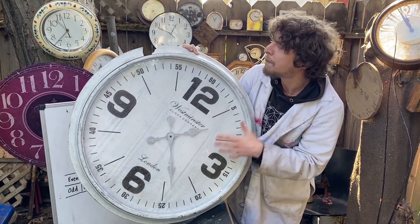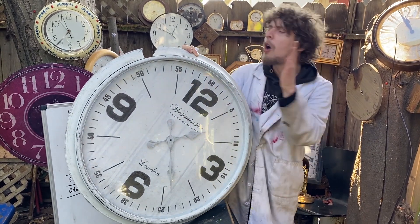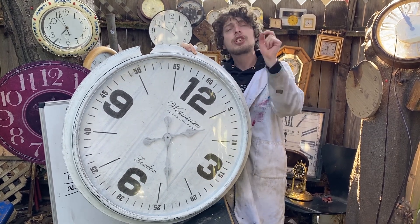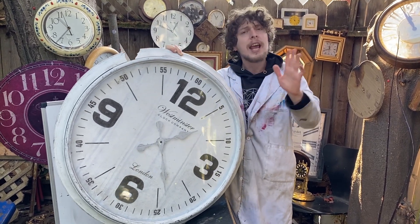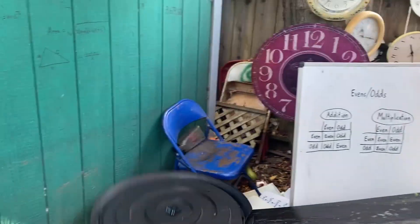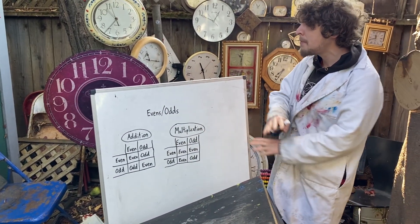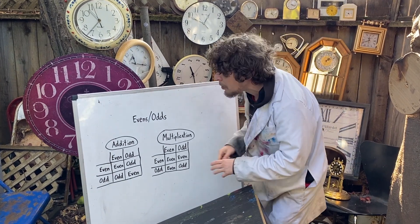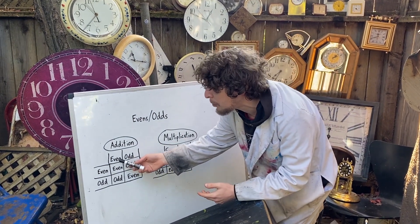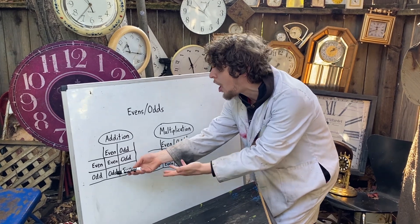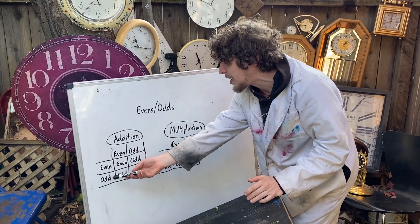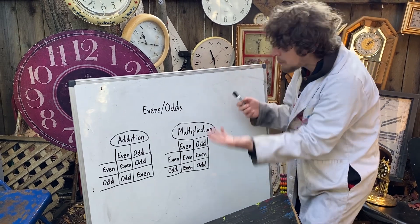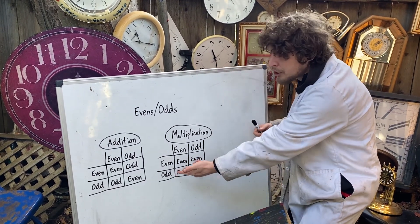About even and odds that may be familiar to you. You may remember that any even number plus an odd gives you an odd, any odd number plus an odd gives you an even, or with multiplication, even times odd is even.